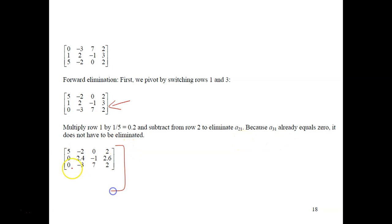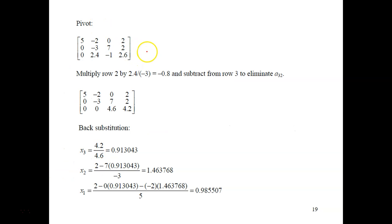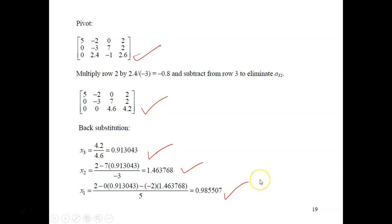We solve the new system regularly, arriving at an augmented matrix where we pivot again — one row goes down and another comes up. After the final elimination, we perform back substitution to find x1, x2, and x3. That's all for partial pivoting.